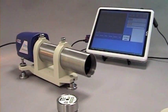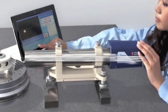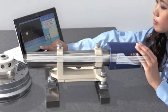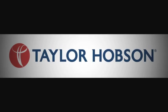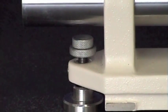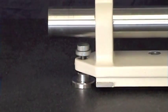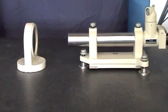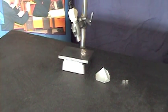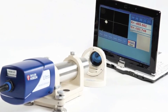Taylor Hobson autocollimators are sensitive optical instruments designed for the accurate measurement of small angular displacements. These instruments are used extensively throughout the world in workshops, tool rooms, inspection departments, and quality control laboratories.